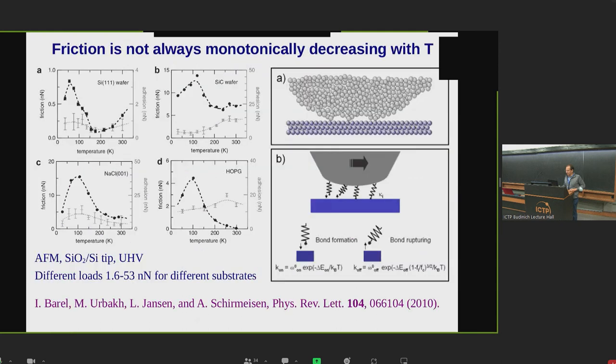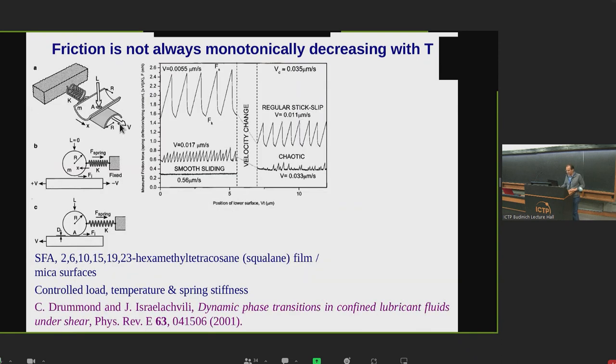However, this is not always the case. In experiments, sometimes one finds that friction does also increase with velocities. For example, this has been discussed in this set of experiments with different rigid substrates, which has been done in Schuster-Mülsmann group and interpreted with modeling by Michael Urbakh, in terms of multi-asperity contacts. You see that there is some friction peak as a function of temperature. There are some regions where friction decreases with temperature, but also ranges where it does increase.